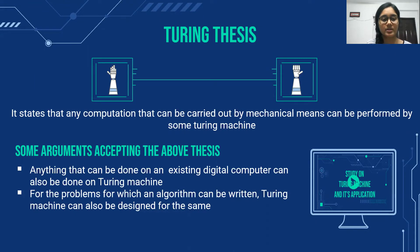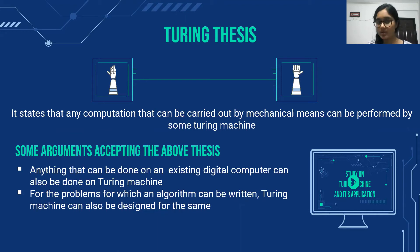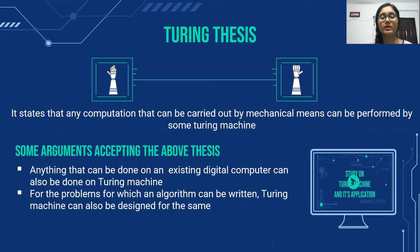This slide states the Turing thesis. It states that any computation that can be carried out by mechanical means can be performed by some Turing machine. This statement proves how powerful a Turing machine is compared to pushdown automata and finite automata. We have two supporting arguments: firstly, anything that can be done on an existing digital computer can also be done on a Turing machine; and secondly, for any problem for which an algorithm can be written, a Turing machine can also be designed for the same. Both statements support the thesis and prove how powerful the Turing machine is.